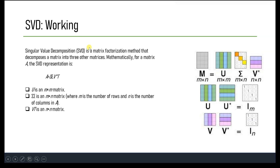In essence, PCA utilizes SVD to perform dimensionality reduction by selecting the most significant components representing the direction of maximum variance, while SVD itself is a more general matrix factorization technique with broader applications. Mathematically, SVD is represented as A = U Σ V^T, where U and V are orthogonal matrices and Σ is a diagonal matrix containing the singular values of A.